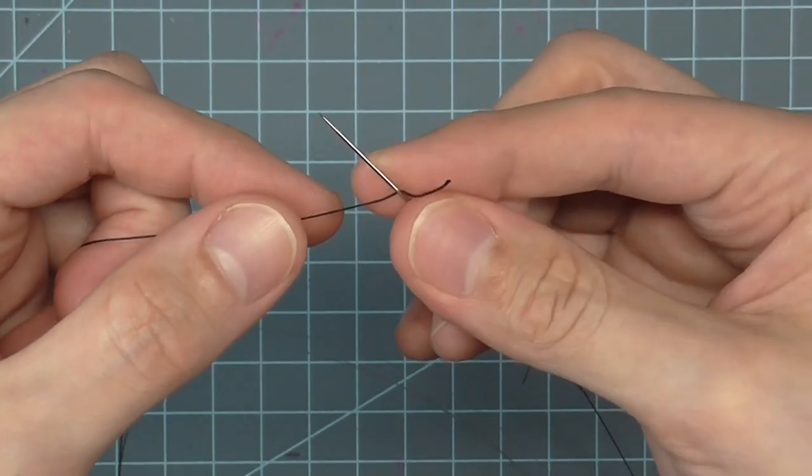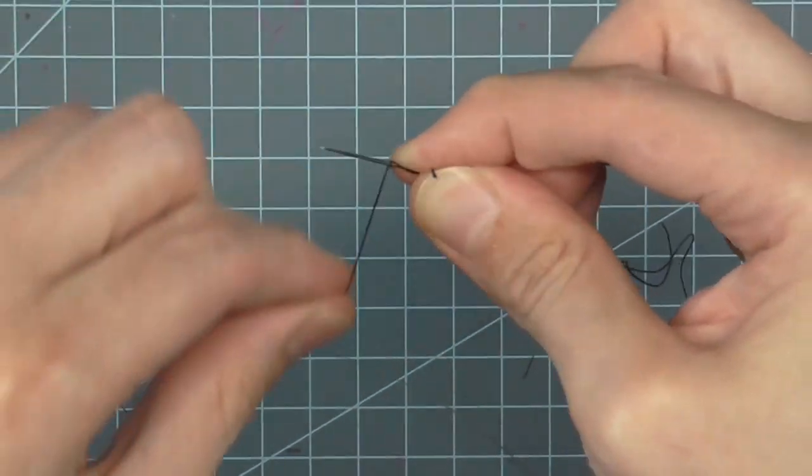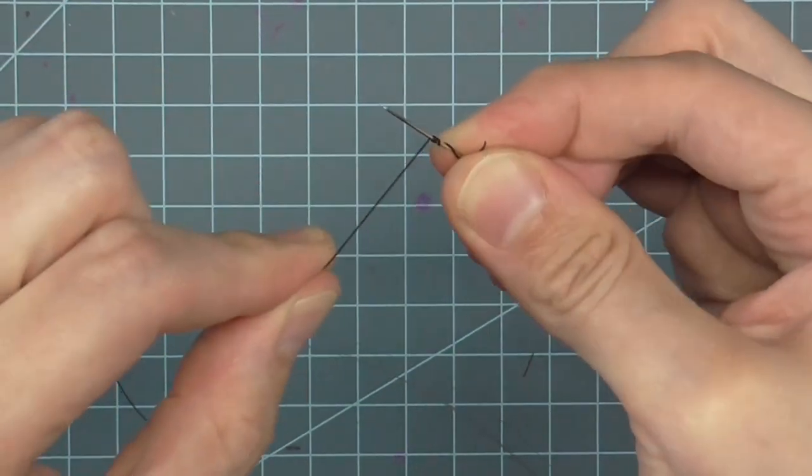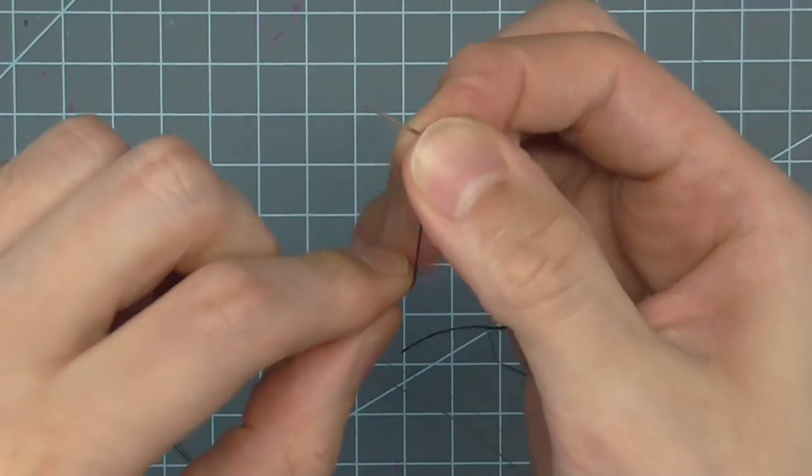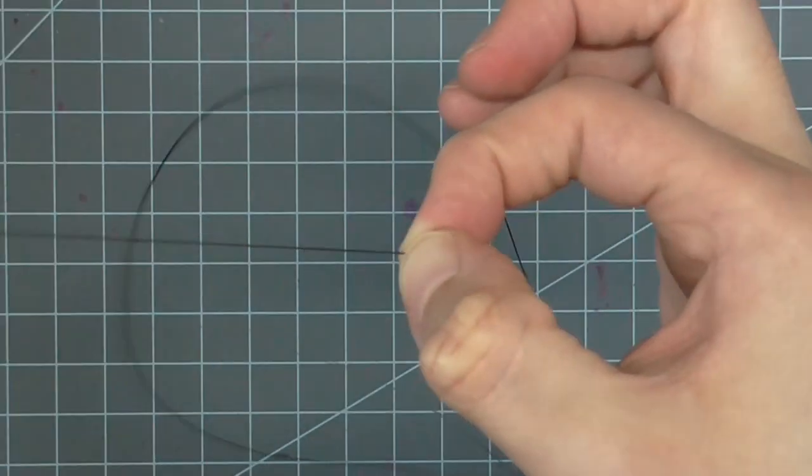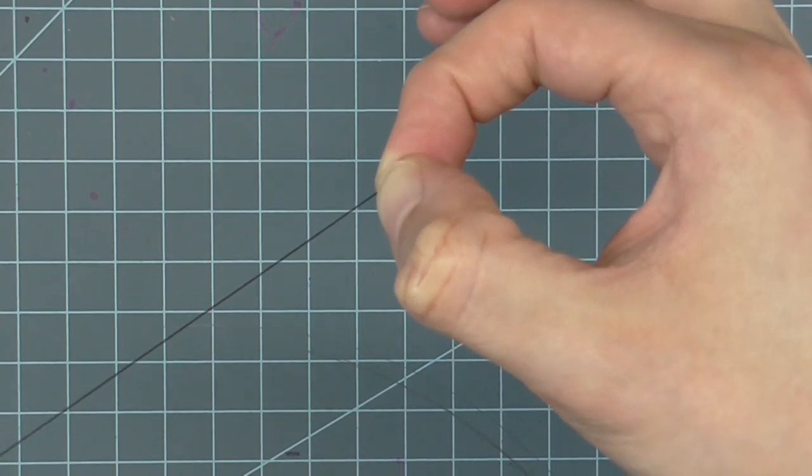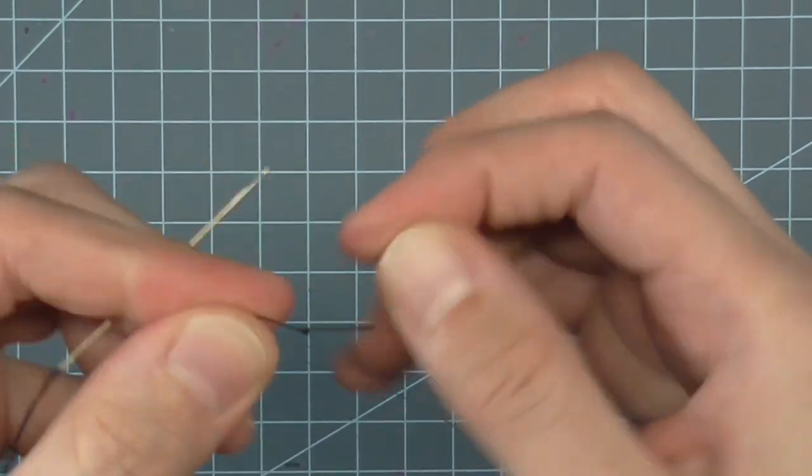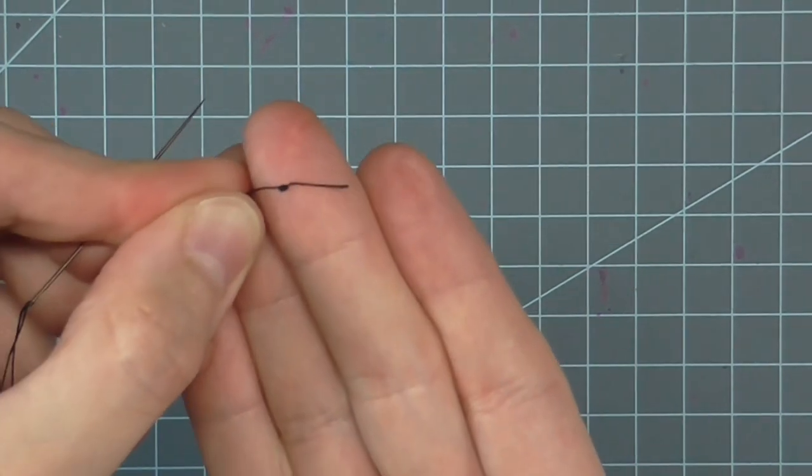Place the tail end of the thread against the needle in the opposite direction of the sharp bend. Wrap the thread around the needle a few times. Grip the wraps between your fingers and pull the needle out away from you, still gripping the thread wraps. Continue pulling all the way to the end of the thread. This forms a quilter's knot on the end. The thread is ready to sew with.